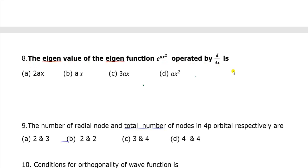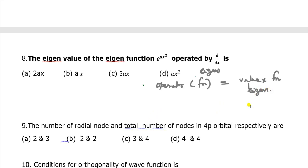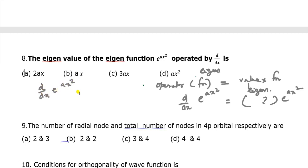Question 8: What is the eigenvalue of the eigenfunction e^(ax²) operated by d/dx? For an operator, when it operates on a particular function and gives a constant times the same function reproduced, that function is called an eigenfunction and the constant is the eigenvalue. Here, applying d/dx to e^(ax²) gives 2ax times e^(ax²). So the eigenvalue is 2ax.